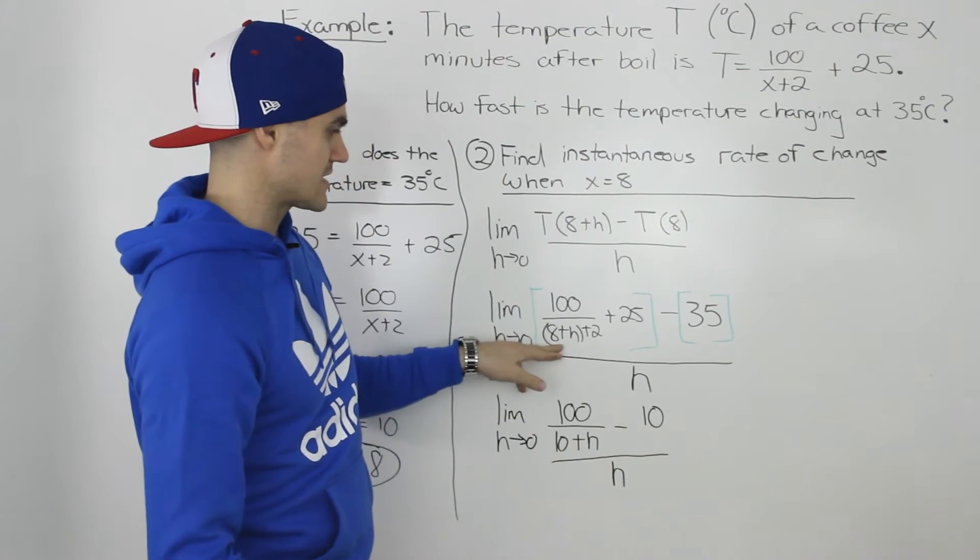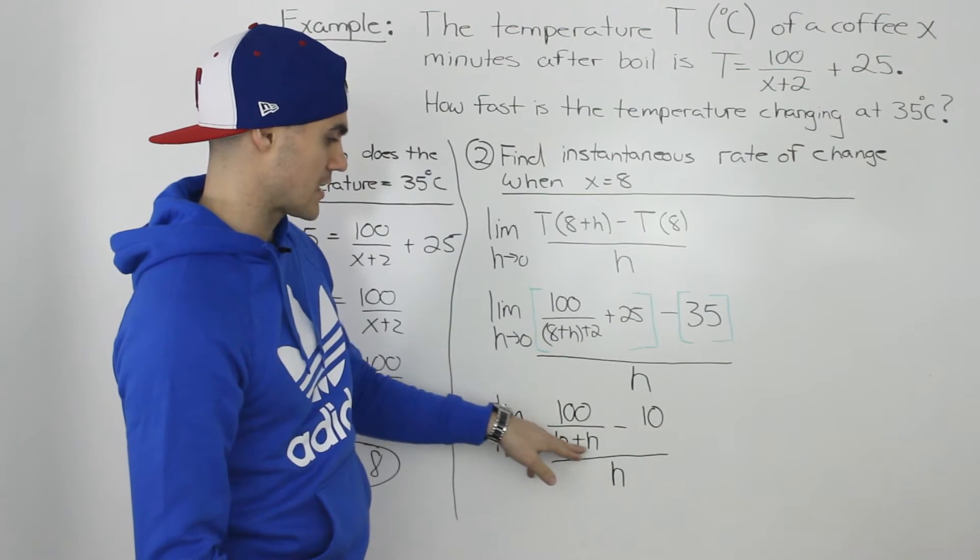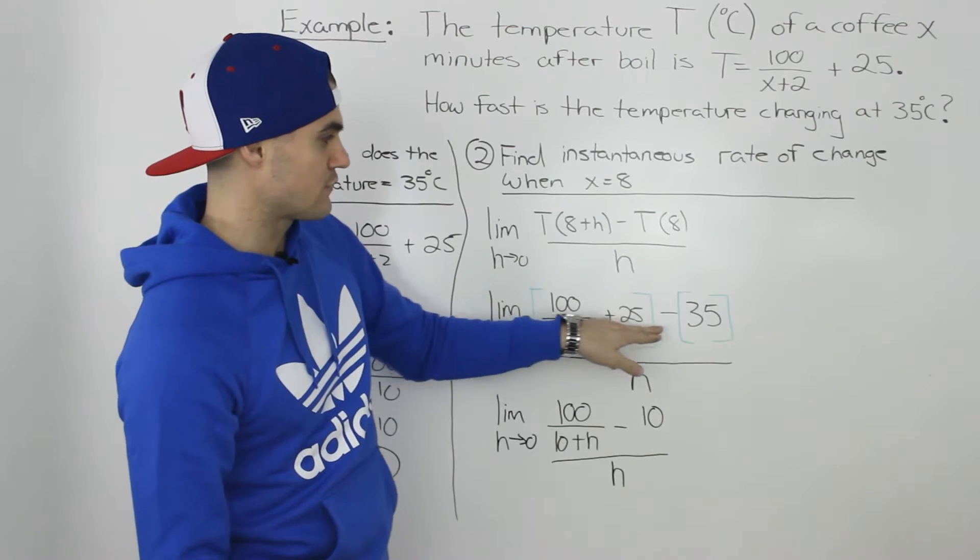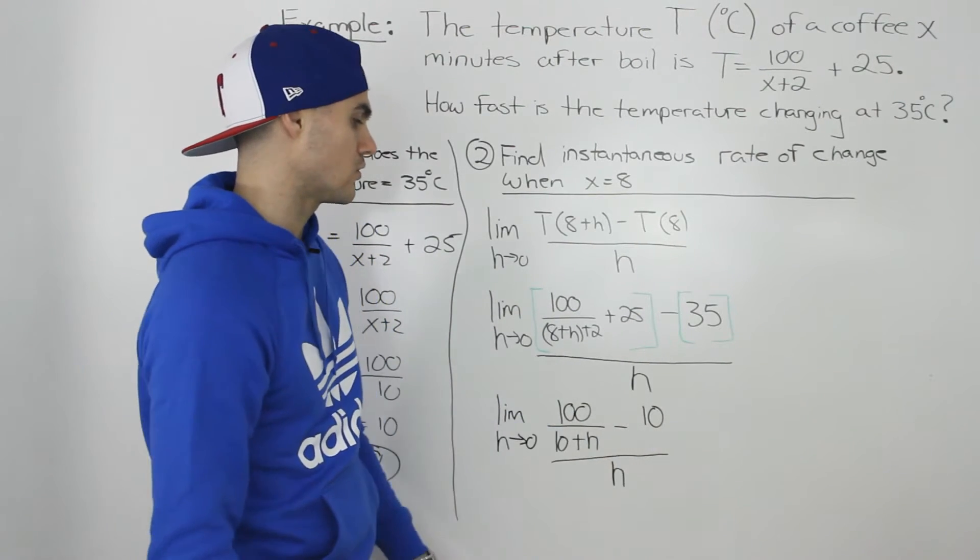And then further simplifying this 8 plus h plus 2, we could add the 8 and the 2. So we'd be left with 10 plus h in that denominator. And then 25 minus 35 gives us negative 10. And this is still all over h.